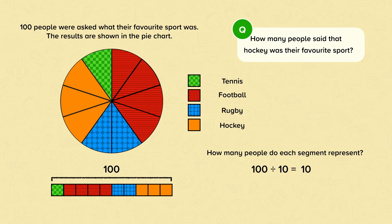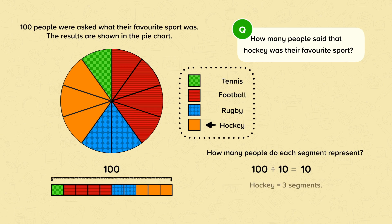Now we need to look at the key. Hockey is represented by orange. There are three orange segments, so we need to multiply the value of each segment, which is ten, by three. So the answer is thirty.